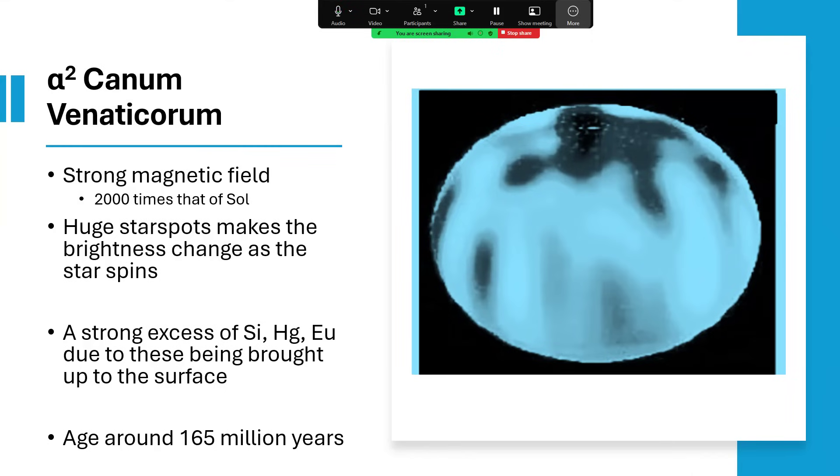Another feature about the light from Alpha 2 is the spectrum shows a very strong excess in what we call some of the peculiar metal elements. In this case, silicon, mercury, and europium, along with others, are in excess in the spectrum. We think these are being brought up to the surface from the core. It's a fairly young star, 165 million years. These A-type stars will only live about this sort of age range, perhaps as much as 500 million years.